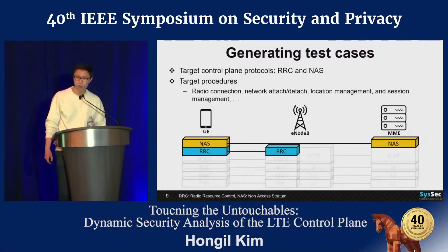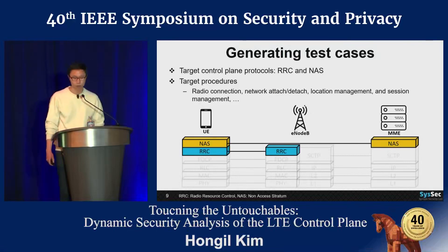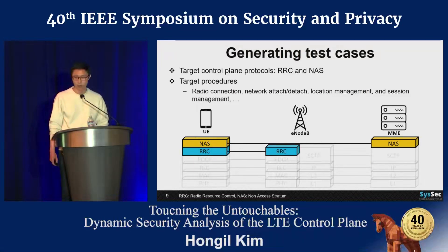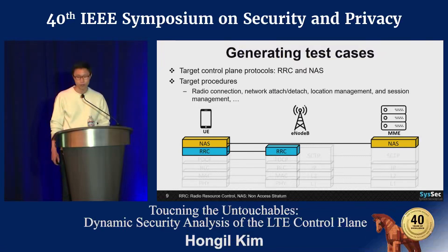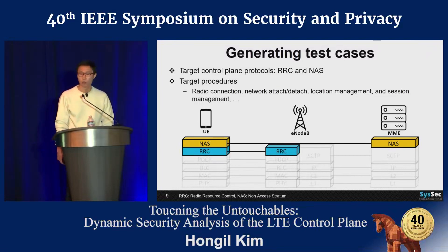Among various control plane protocols, we targeted two. One is Radio Resource Control, RRC, which is a communication protocol between UE and eNodeB. The other is Non-Access Stratum, NAS, a communication protocol between UE and MME. These two protocols handle key control functions such as radio connection establishment, network attach, location management, and session management for UEs.